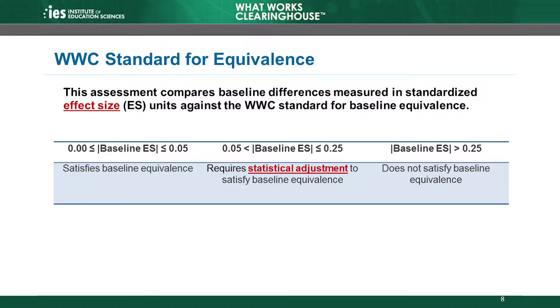The WWC assesses baseline equivalence on each outcome measure to determine whether differences at baseline were small — that is, the groups are equivalent — moderate, that is, the analysis requires a statistical adjustment to account for preexisting differences in order to meet WWC group design standards with reservations — or large, that is, the groups were too different at baseline to meet WWC group design standards even with statistical adjustment. The WWC measures the differences between the intervention and comparison groups on a baseline characteristic using a standardized mean difference called an effect size.